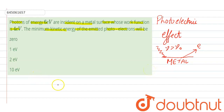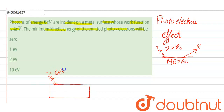Now, in this question it is written that the energy of incident radiation is 6 electron volts, meaning the energy of each photon is 6 electron volts. Each photon will give its energy to each electron, and the electron, on gaining this energy, will come to the surface and move with some kinetic energy.